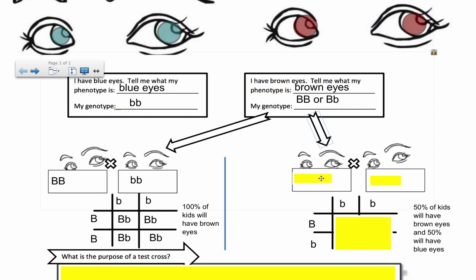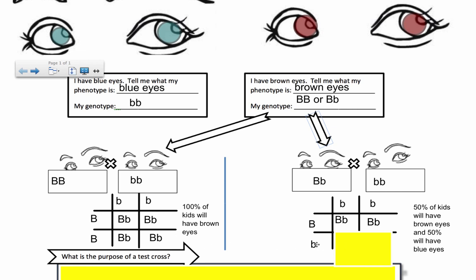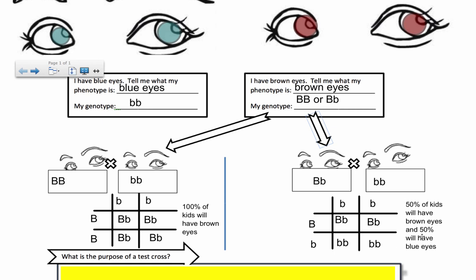If it's the other situation and this person is actually heterozygous — big B, little b — and we cross them with the blue-eyed person, by the law of segregation there's a big B gamete and a little b gamete. The result is that 50% of the offspring will be big B, little b, and the other 50% will be little b, little b. So 50% of the kids will have brown eyes and 50% will have blue eyes. It really depends on whether this parent has two copies of the dominant allele or if they're heterozygous. The outcome will be totally different — that's how you know. That's what a test cross is.